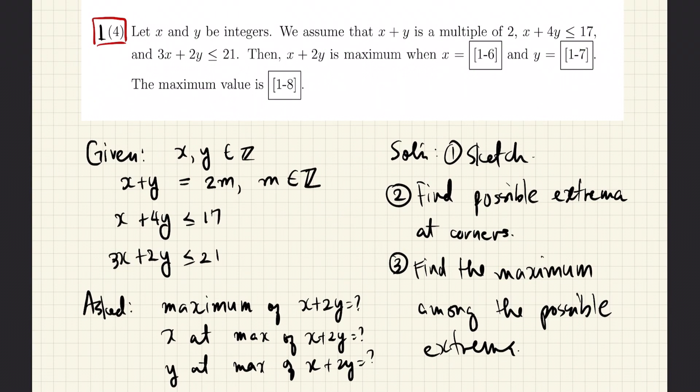For this problem we are given two numbers X and Y, and we are told that both of these numbers are integers. We are also told that the sum of X and Y is an even number, which means that M here is an integer and 2M is of course a multiple of 2, which is the definition of an even number. We are also told that X and Y both satisfy both of these inequalities.